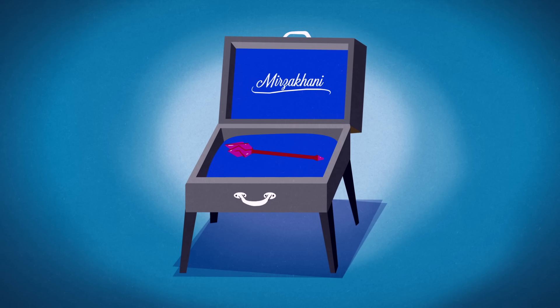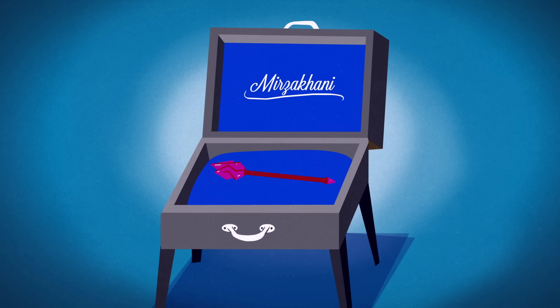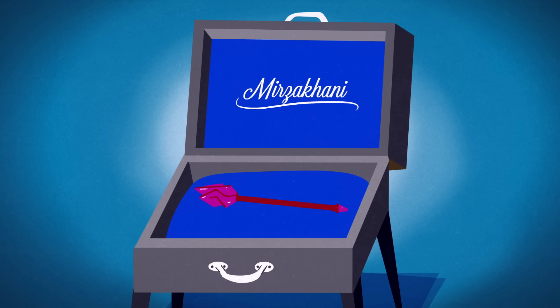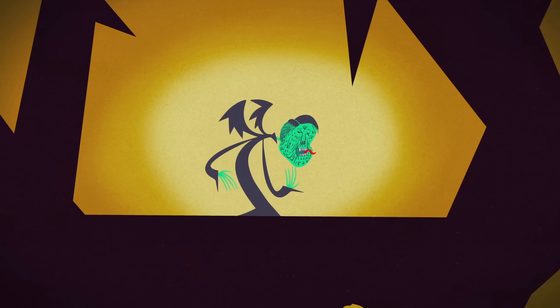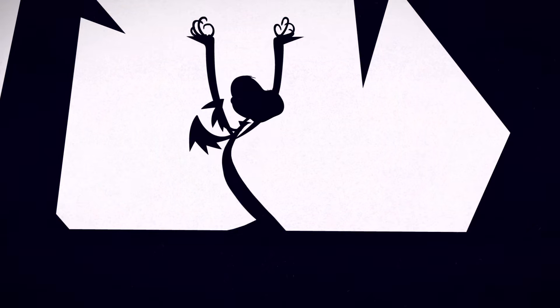The fabled Mirzakhani wand is the most powerful magical item ever created. And that's why the evil wizard Moldavort is planning to use it to conquer the world.